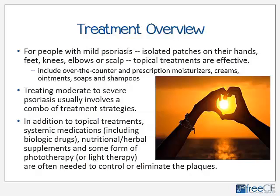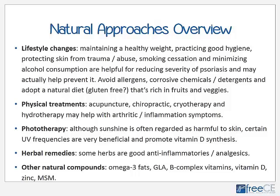For people with mild psoriasis — estimated at about 70 to 75 percent of cases — who have isolated small patches on the hands, feet, elbows, or scalp, topical treatments are effective and usually all that is needed. These can include over-the-counter or prescription moisturizers, creams, ointments, soaps, and shampoos. Treating more moderate to severe psoriasis usually involves a combination of strategies, including topical treatments, systemic medications such as biologic drugs, nutritional and herbal supplements, and often phototherapy or light therapy.